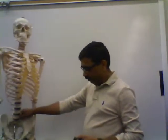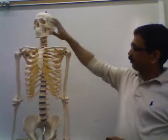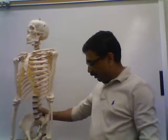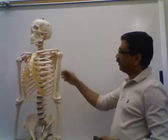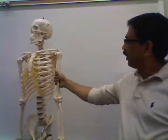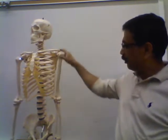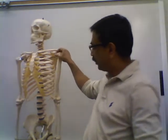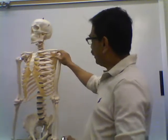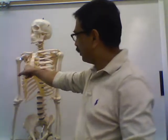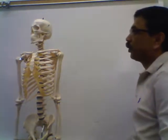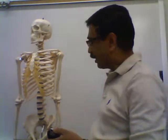Today we will talk about the skeletal system. The skeletal system consists of the skeleton, which contains bones and joints. Bones meet or unite at the joints. You also have cartilages in the skeleton. Those are the parts of the skeletal system.